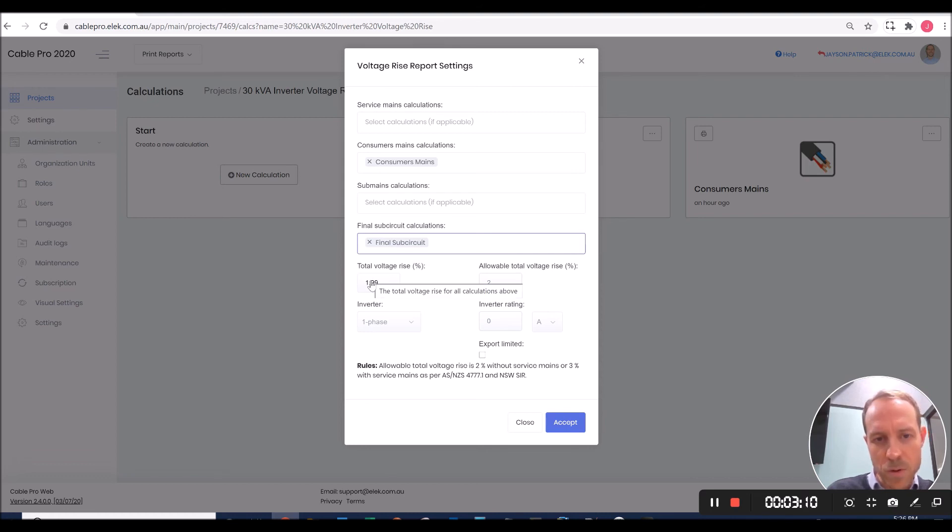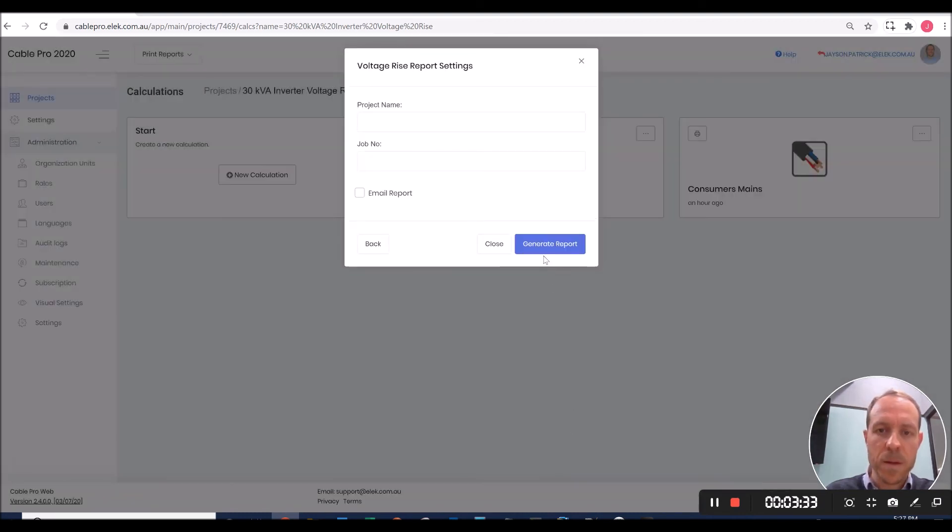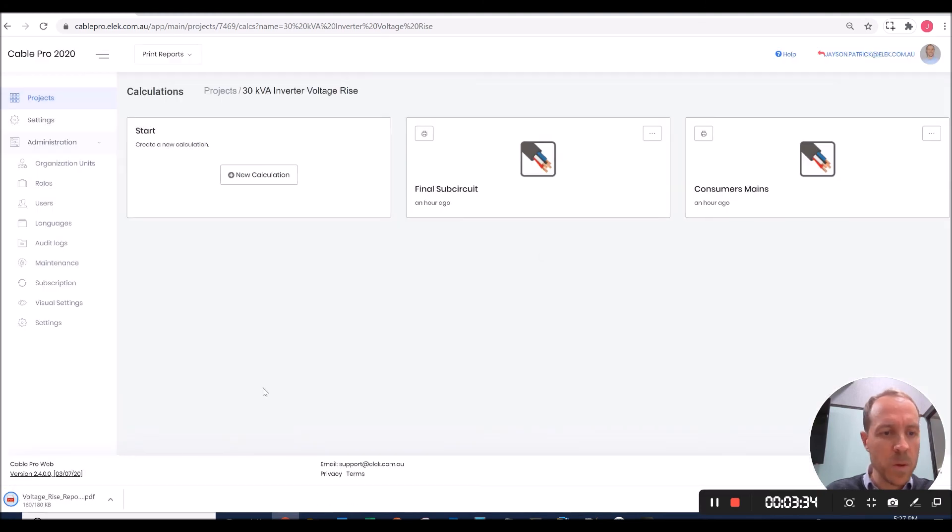The total voltage rise is calculated to be 1.99%. Our allowable voltage rise is 2%. Our inverter is a three phase. The inverter rating is 30, in this case kilowatts or kVA. I'll accept that. I'll generate the report.